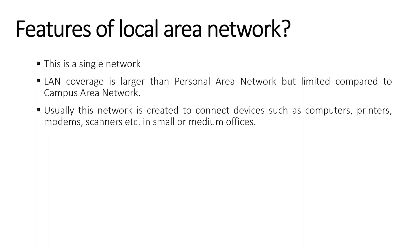Characteristics of Local Area Networks: LAN is a single network. LAN coverage is larger than a Personal Area Network but limited compared to a Campus Area Network. Usually this network is created to connect devices such as computers, printers, modems, and scanners in small or medium offices. Data transfer speed on LAN is usually 10 Mbps to 100 Mbps.